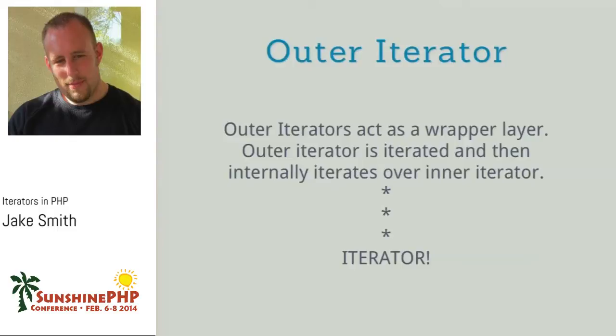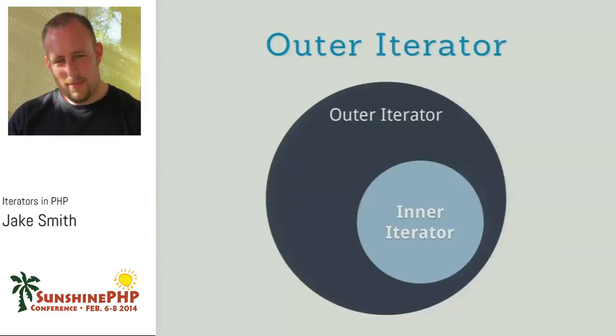OuterIterators act as a wrapper layer. The outer iterator is iterated, and then it internally iterates over the inner iterator. Essentially it's a wrapper — both iterators are rotating at the same time. I like to think of it like the insides of a watch: they're both rotating at the same time. I have plenty of code examples later, so this will make a little more sense.